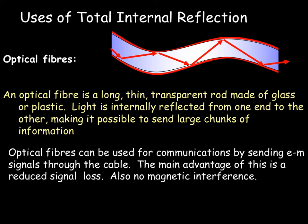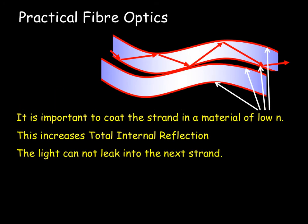Optical fibers can be used for communications by sending EM signals. Used to get a lot of magnetic interference from one wire to another. You can't do that anymore because you don't get leakage from one to the next. You have to coat the fibers with a low-end plastic, something with a very low refractive index. This increases the amount of total internal reflection you get because it changes the critical angle, but also it stops one strand leaking its light into another strand by contact.